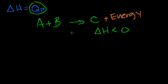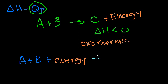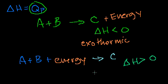And we learned in a previous video that we call this an exothermic reaction. If you have a reaction that needs energy — A plus B plus some energy yields C — that means that the system absorbed energy. The amount of energy you absorbed is your change in enthalpy, so your delta H is going to be positive. You've absorbed energy into the system, and we call these endothermic reactions.